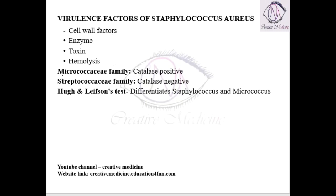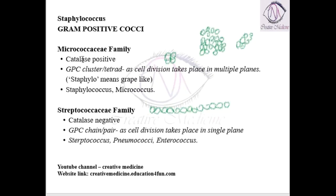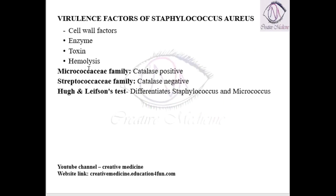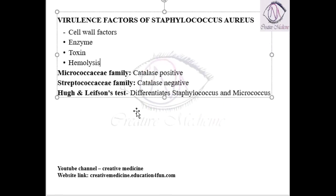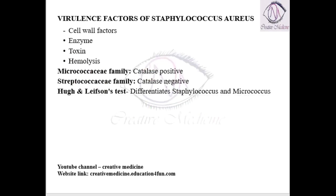The main important thing is, as I have already said, there are two families present in gram-positive cocci. Gram-positive cocci contains the Micrococcaceae family and the Streptococcaceae family. The main differentiation of these two is by catalase. If the organism is catalase positive, then it belongs to the Micrococcaceae family. If it is catalase negative, then it belongs to the Streptococcaceae family.